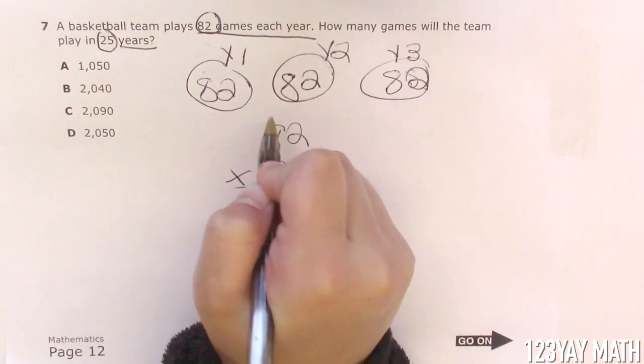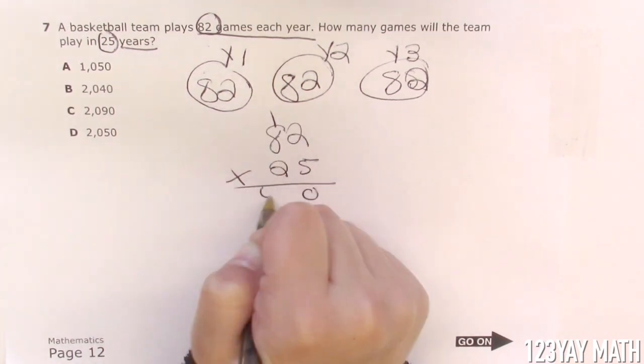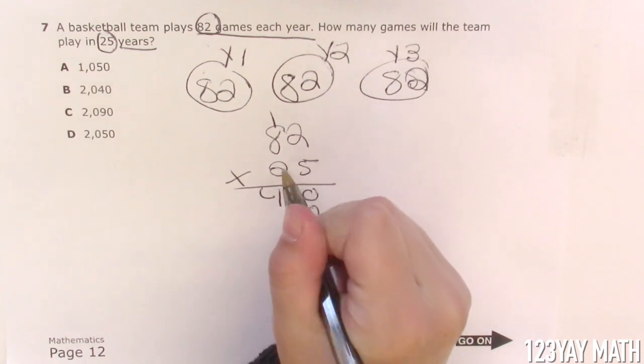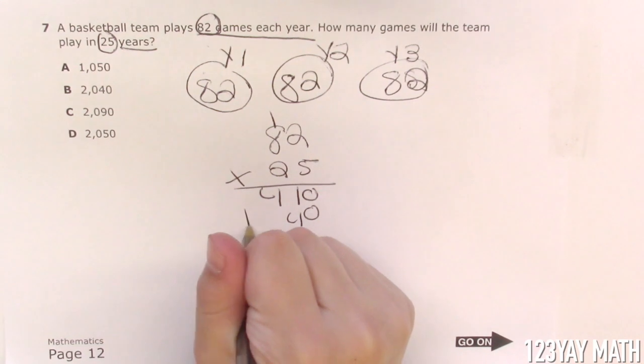5 times 2 is 10. 8 times 5 is 40. Plus 1, that's 41. Don't forget to drop that 0. 2 times 2 is 4. 2 times 8 is 16.